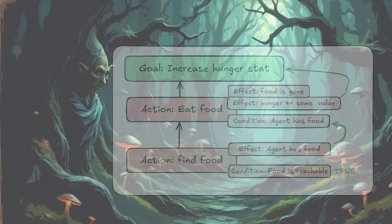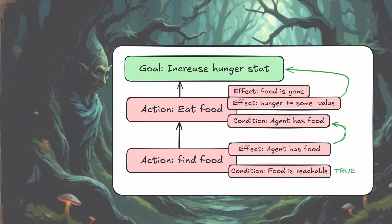If we look at this example: say our goal is to increase the hunger stat, so the agent wants to improve its hunger by eating something. You could imagine a chain of actions being to find food, go and get the food, and then to eat the food — meaning that the food is now gone, but the agent's hunger has increased by some value.